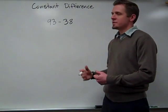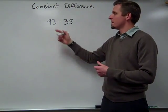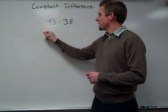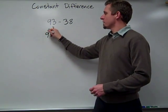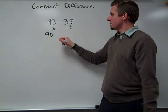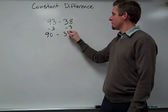So one more time using constant difference, this time changing the 93. I can change 93 to 90 by subtracting 3. Well, if I take away 3 from there, I also have to take away 3 from the 38. So 90 minus, that gives me 35.